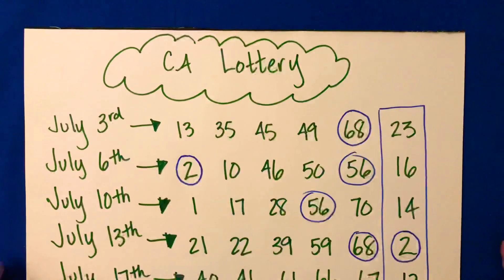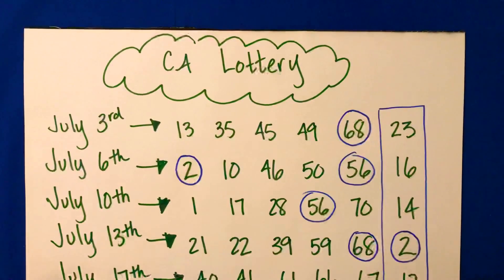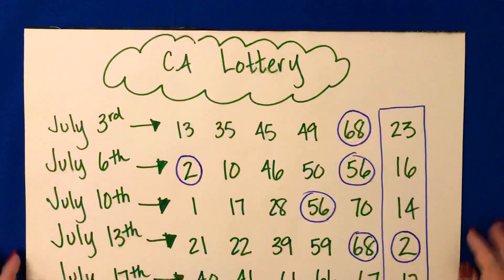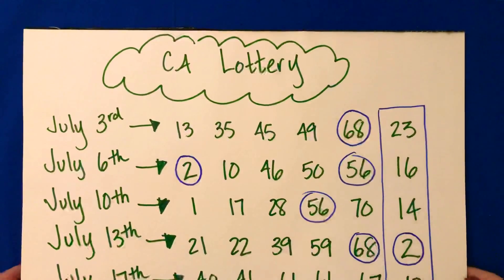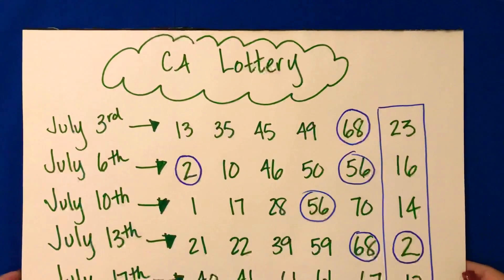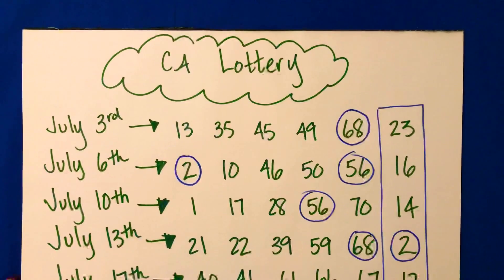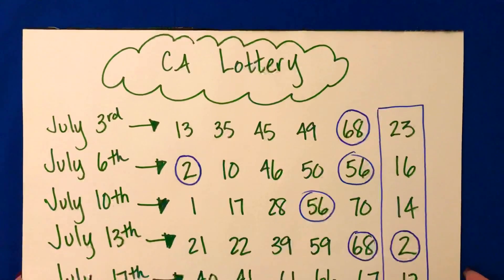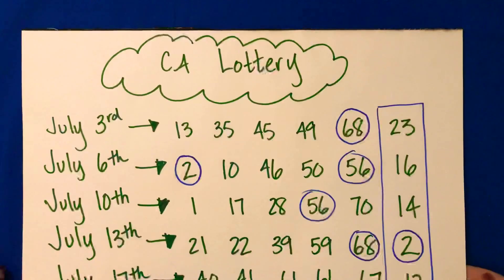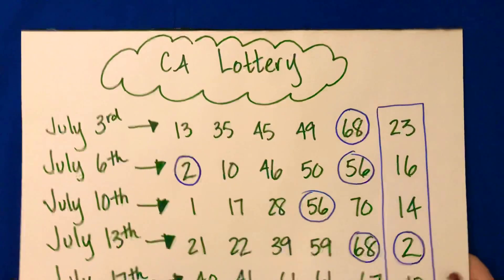There can also be no mode. So if you're looking at a set of numbers and there aren't any numbers that are repeating, then we would say there is no mode in this data set. But this data set, we have the mode of 2, 56, and 68. So those might be three numbers I might choose from if I were going to play the lottery.